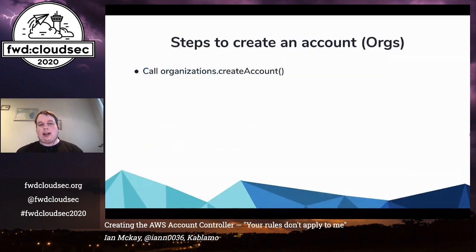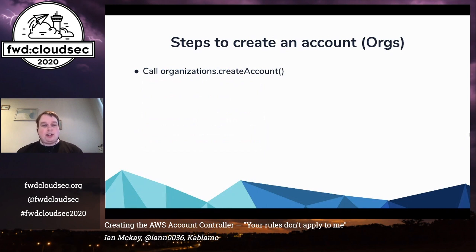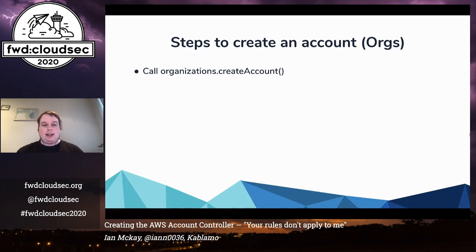So what does this look like programmatically? How do we create an account through AWS Organizations? Well, it's actually pretty easy. We call organizations.createAccount, we give it an account name, we give it an email, and that's it. A couple of seconds later, we have our account.